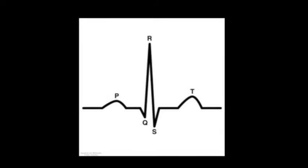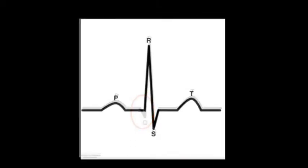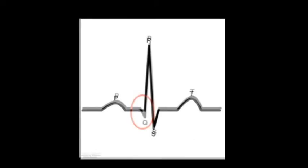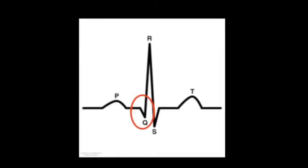Old MI, or completed MI, manifests on EKG by the presence of Q waves. How do we define Q waves? If the first deflection after the P wave is negative, that deflection is called a Q wave. If, however, the first deflection after the P wave is positive, there is no Q wave in that lead. So, to call something a Q wave, it must be the first negative deflection after the P wave.